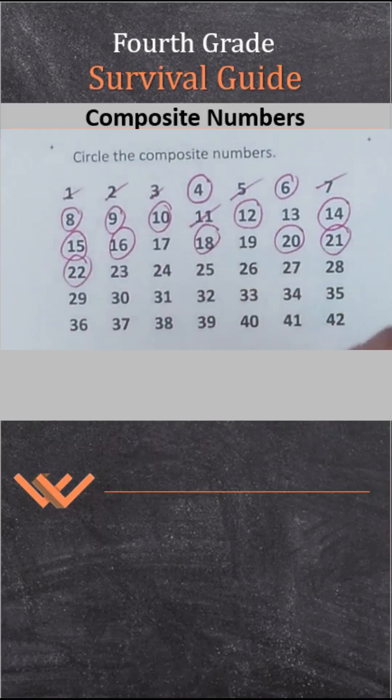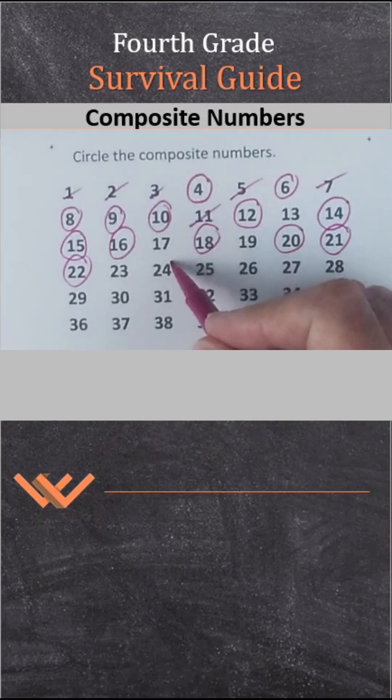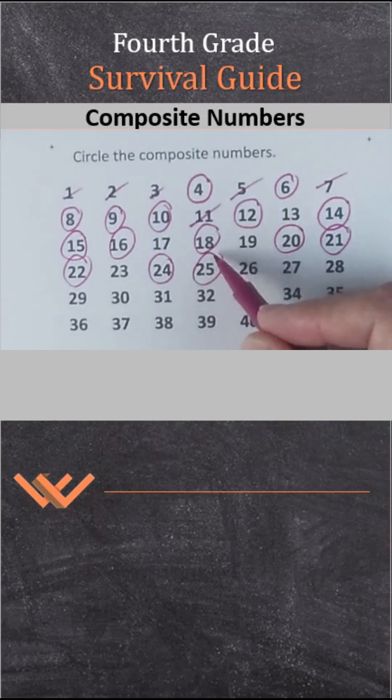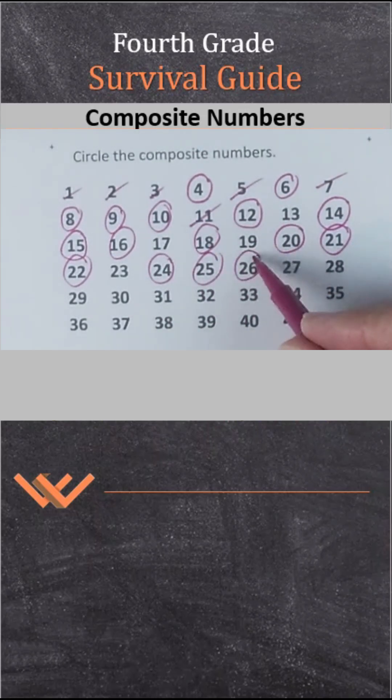22 — 2 times 11. 23 is prime. 24 — 6 times 4. 25 — 5 times 5.